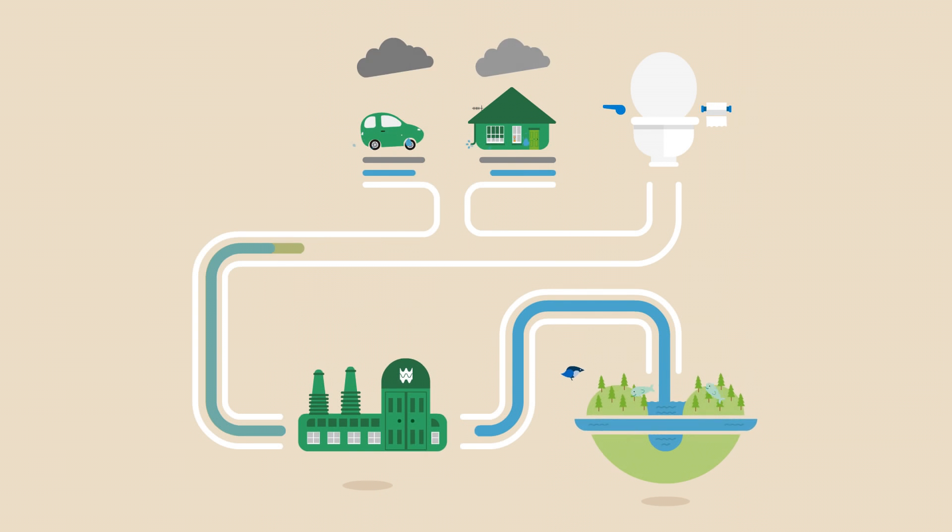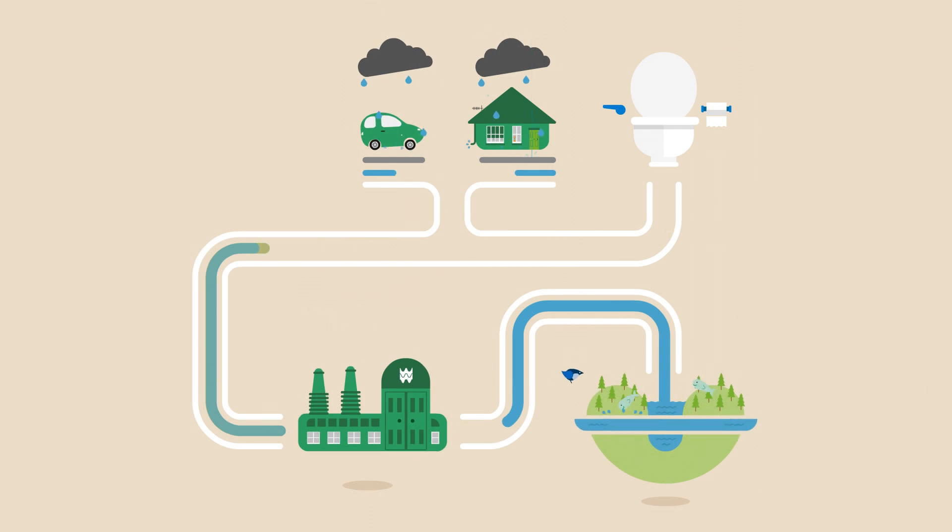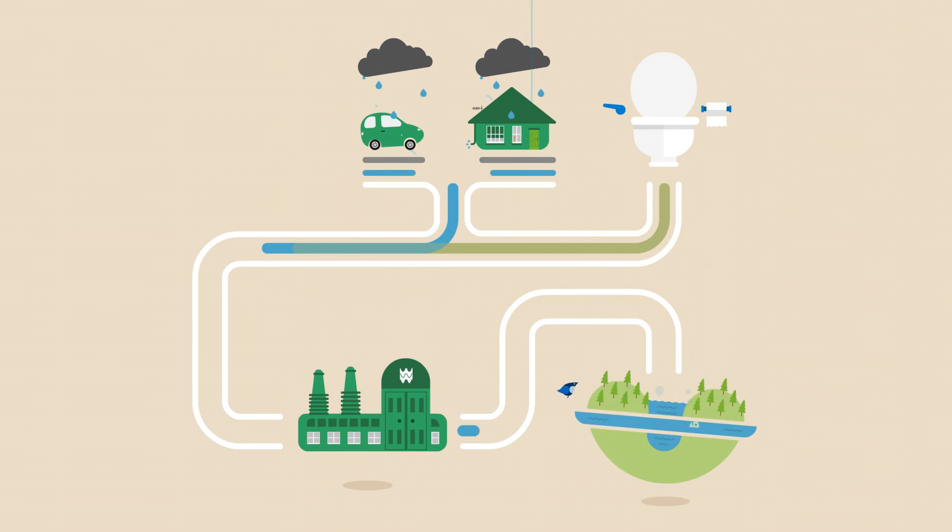Our climate is changing and it rains more heavily, more often. So sometimes there can be more water in these pipes than they can cope with, which could cause sewers to back up and flood homes and roads with untreated sewage.